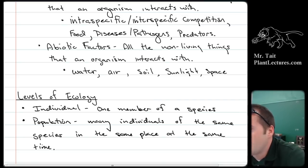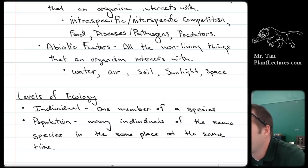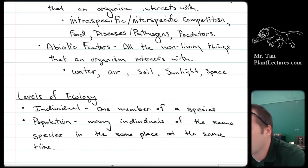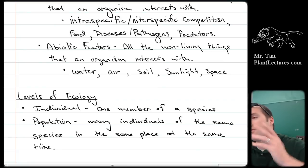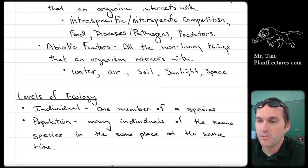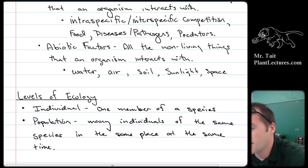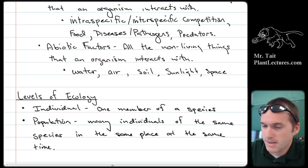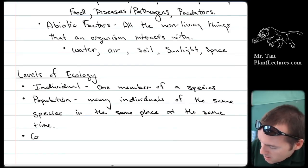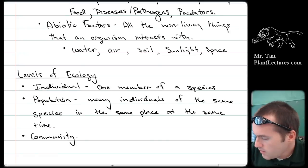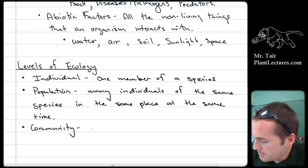You could specify 'the population of Florida in the post-industrial age,' which would include recent generations. The population of the United States would encompass all the states, but the population of Florida wouldn't include people in Georgia. You'd also specify 'human population of Florida' since it has to be one species — it wouldn't include your dog.